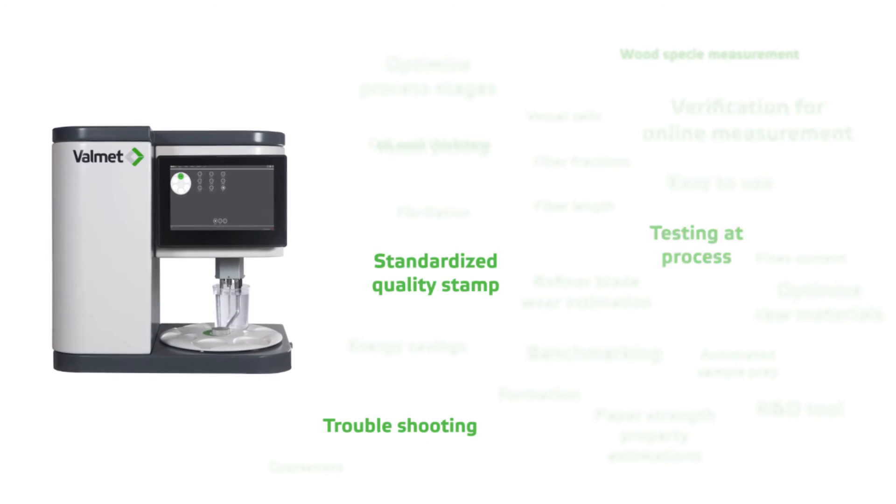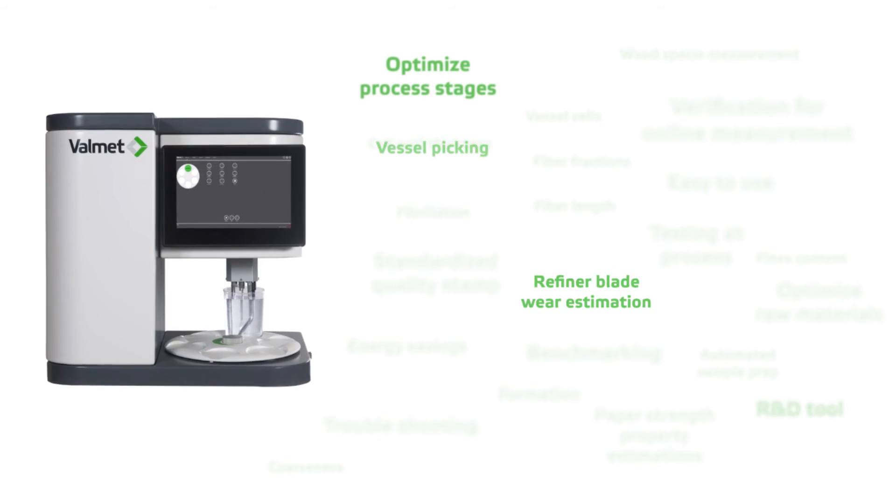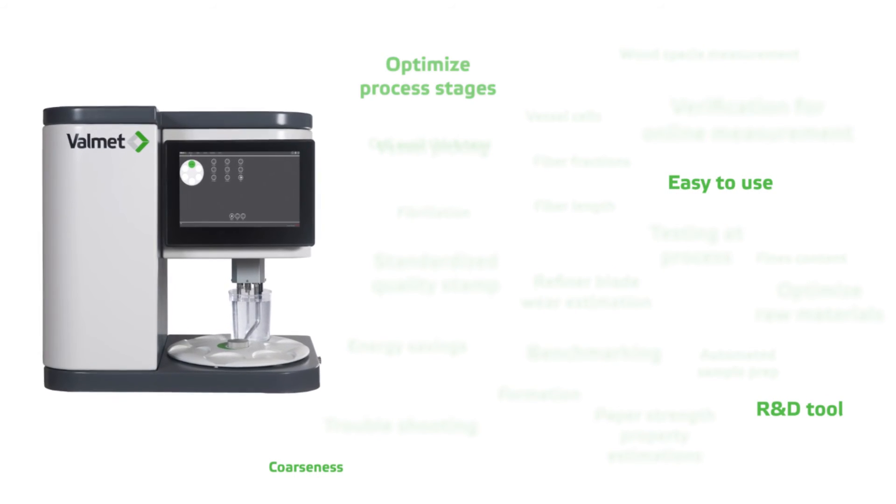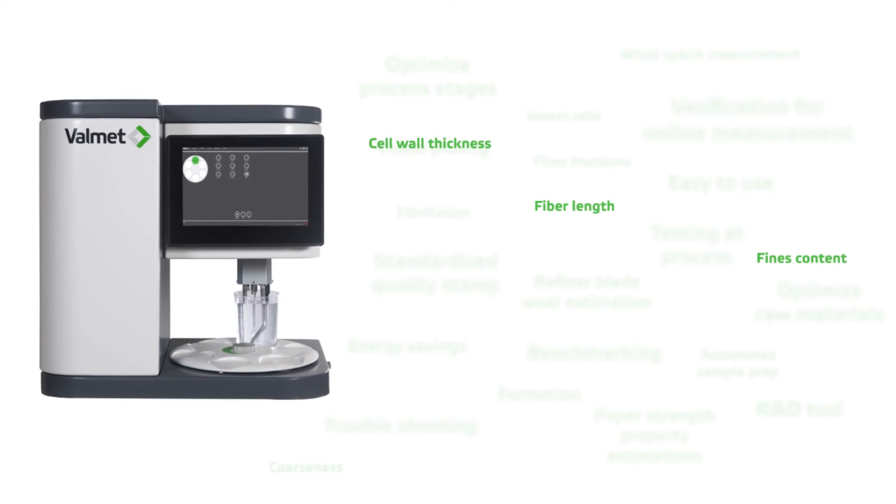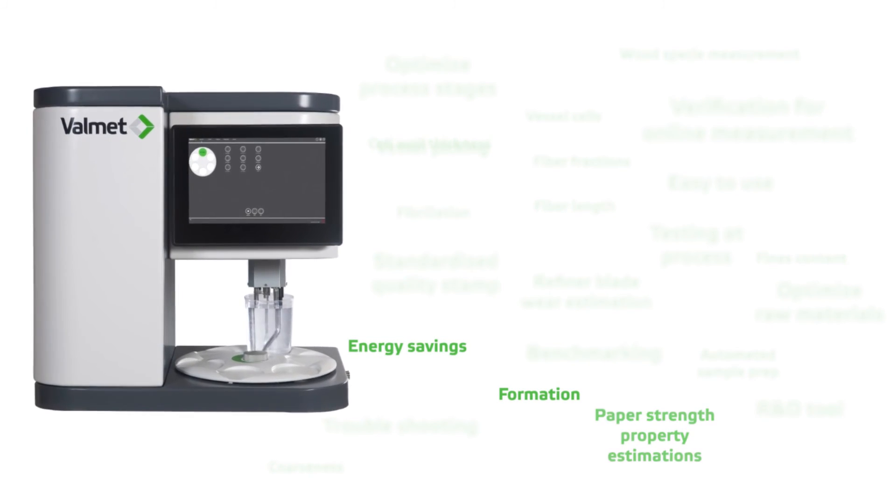Valmet FS5 helps you to know your fibers and Valmet has an extensive know-how about pulp and paper processes. The fiber characteristics information can be used in different process stages, bringing you benefits from a variety of revenue streams, resulting in a very short payback time for your investment.